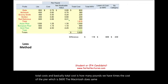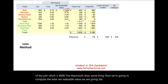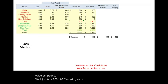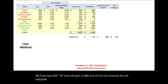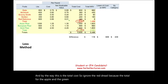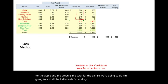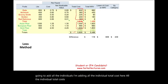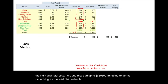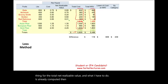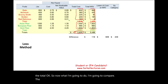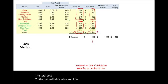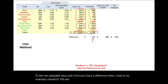We compute total NRV for each variety — for example, 800 pounds times $0.85 = $680. Adding all individual total costs gives $5,605. Adding all individual NRV totals and comparing to cost shows a difference of $119. This is one way to compute the write-down — looking at total inventory overall, you would write down inventory by $119.